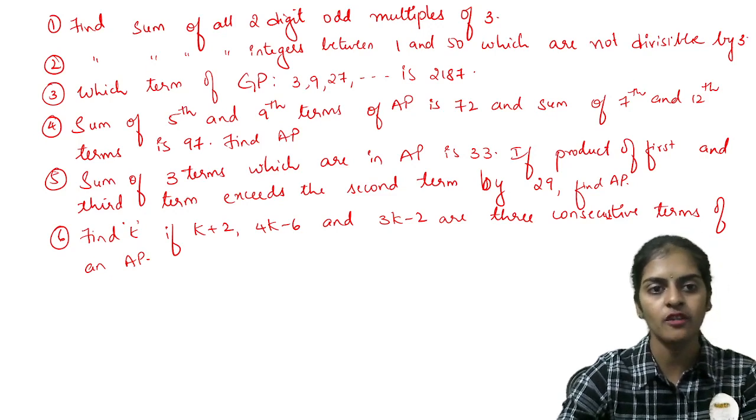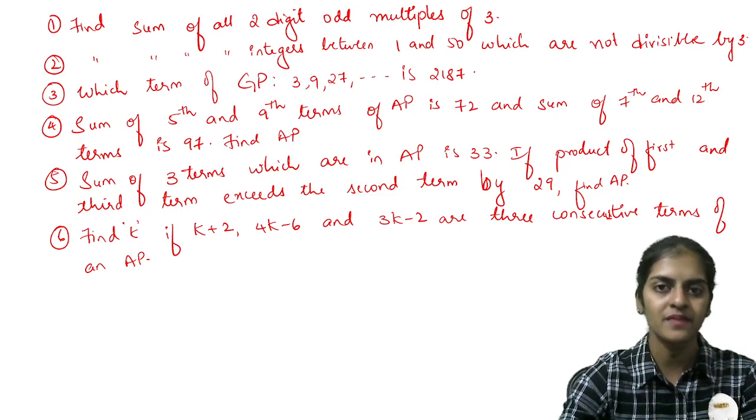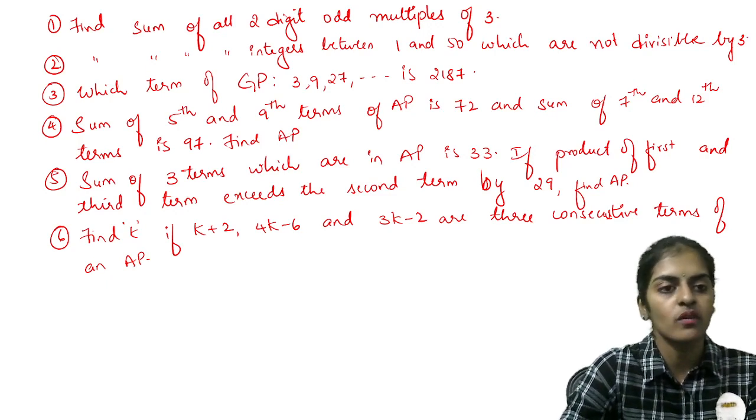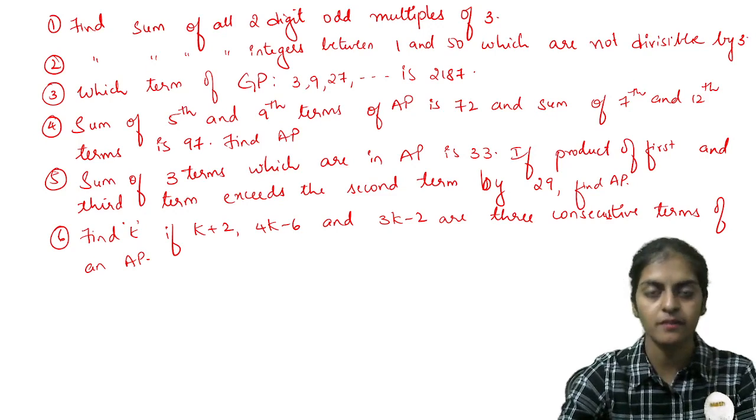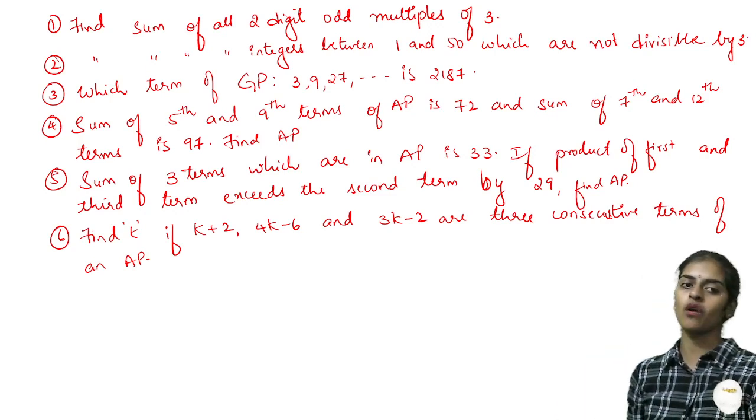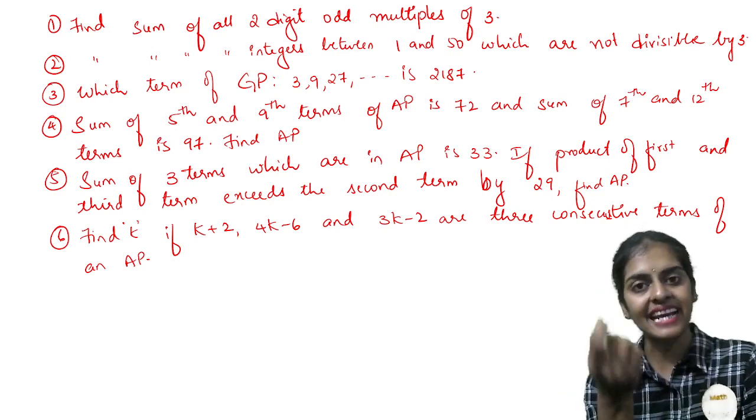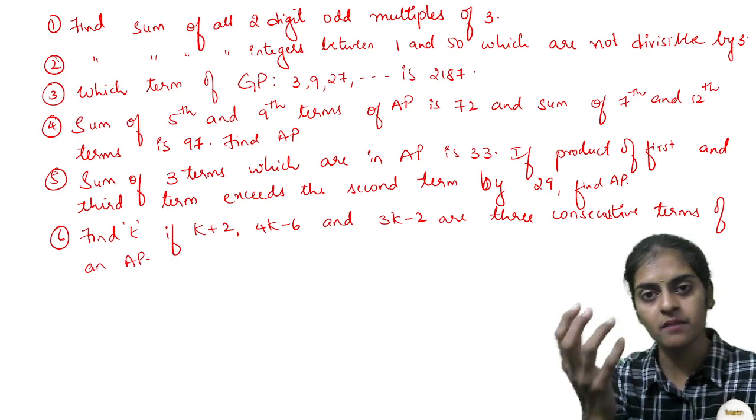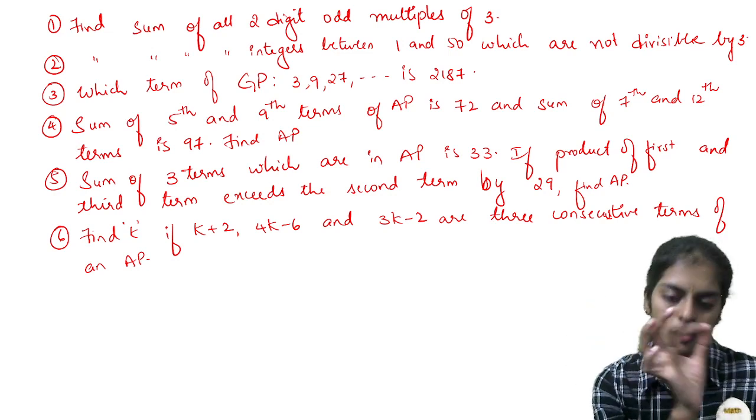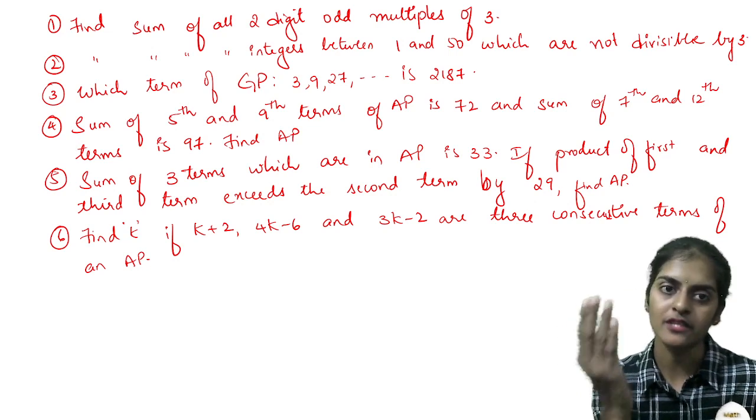The very first question: sum of all two-digit odd multiples of 3. Two-digit numbers start from 10 to 99. Multiple of three starts from 12, but 12 is even, so we want only odd multiples. It starts from 15, then 18 is even, so next is 21. So 15, 21, and likewise taking only odd multiples. The common difference between two numbers will be 6, not 3.